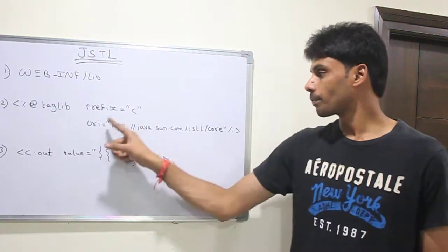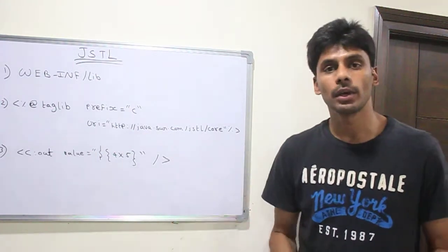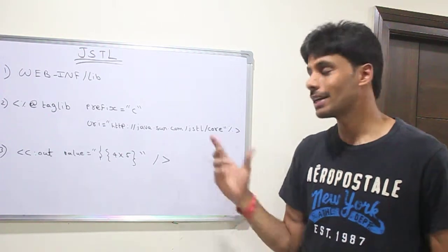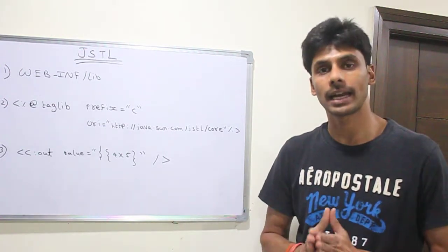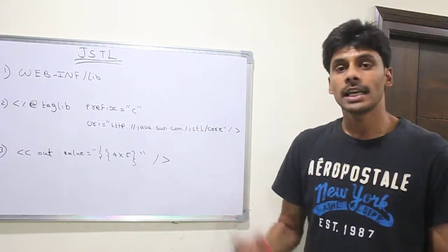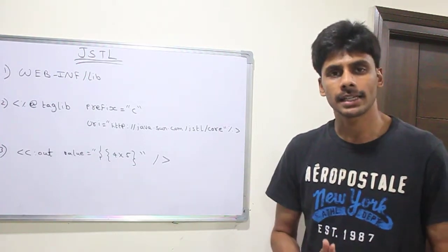So this URI, as I will explain you when we create custom tags, it uniquely identifies a particular tag library. JSTL has the core tags, it has SQL tags, XML tags, etc.